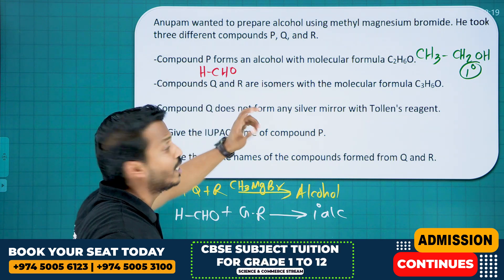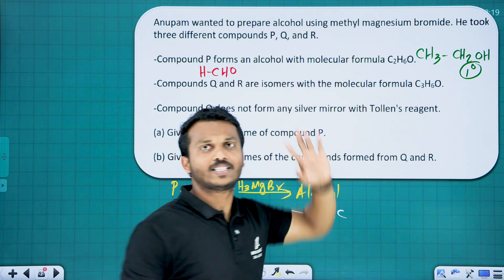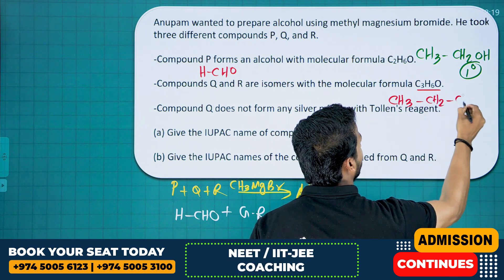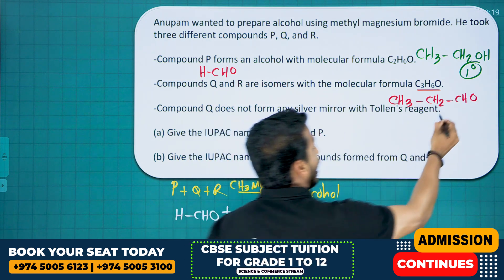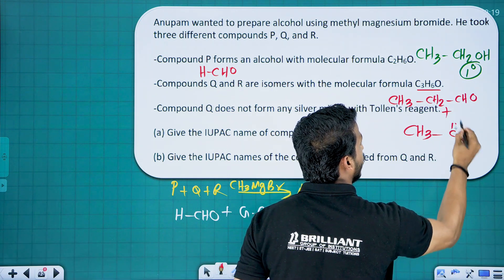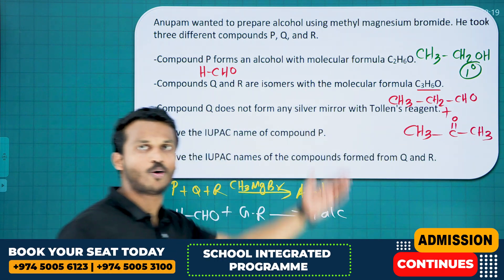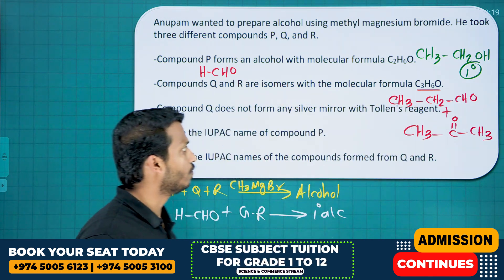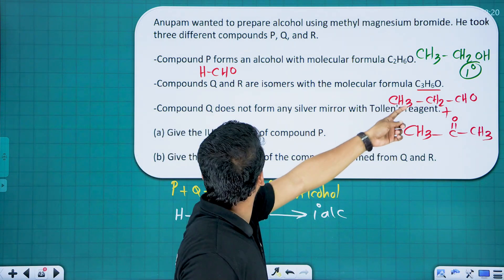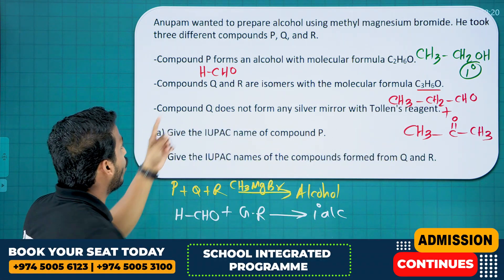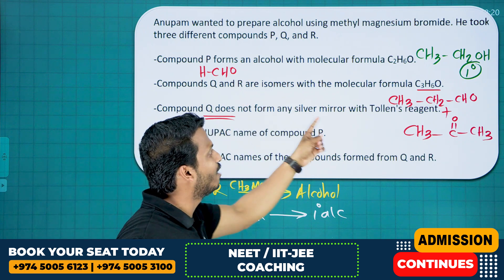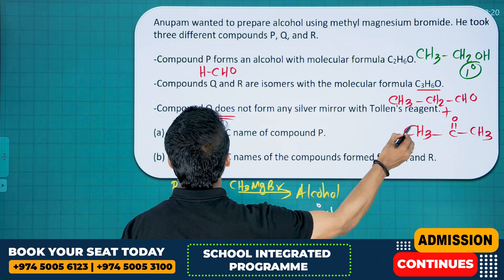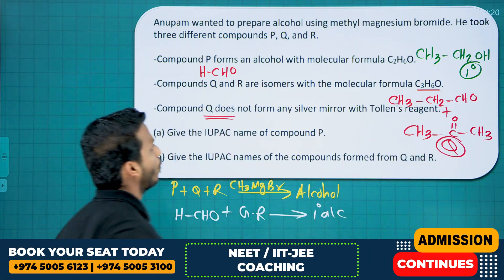Compounds Q and R are isomers with molecular formula C3H6O. C3H6O can be CH3CH2CHO (propanal) or its isomer. The aldehyde's functional isomer is a ketone. Compound Q does not form a silver mirror test (Tollens' test), meaning it is not an aldehyde — it should be a ketone. So compound Q is propanone (CH3COCH3).